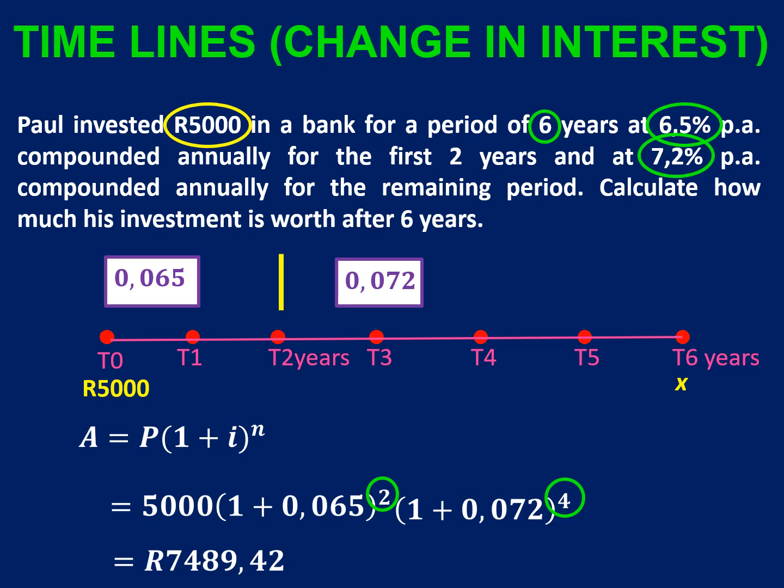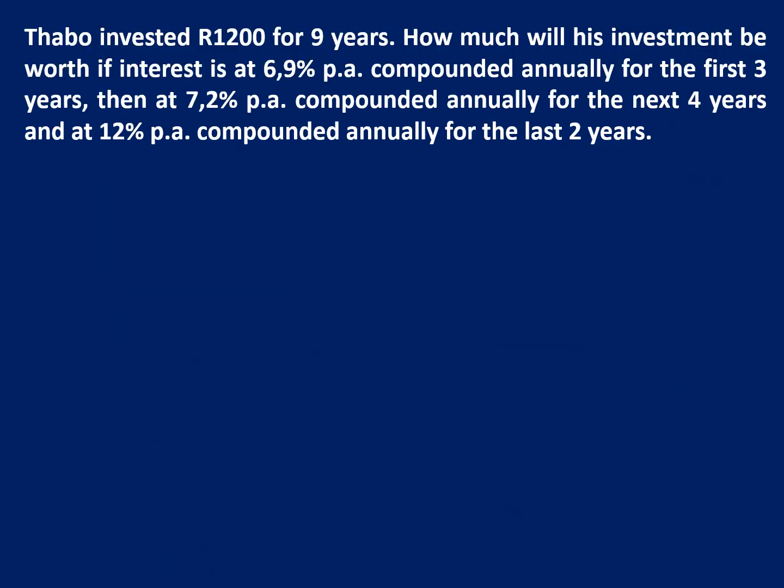Let's try a second example. In this example, Tablo invested R1,200 for nine years. We want to know how much his investment will be worth if interest is 6.9% for the first three years, then 7.2% annually for the next four years, and 12% compounded annually for the last two years. Because we're such good clients and there for a full nine years, they're really rewarding us every year.